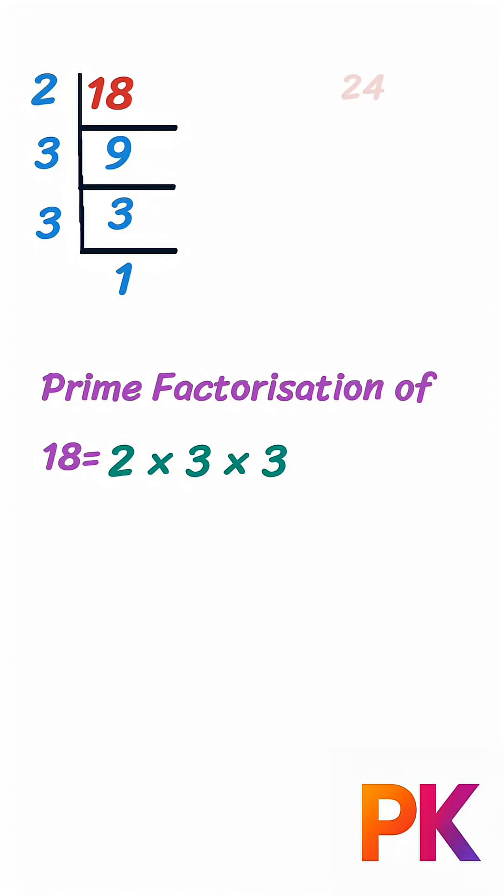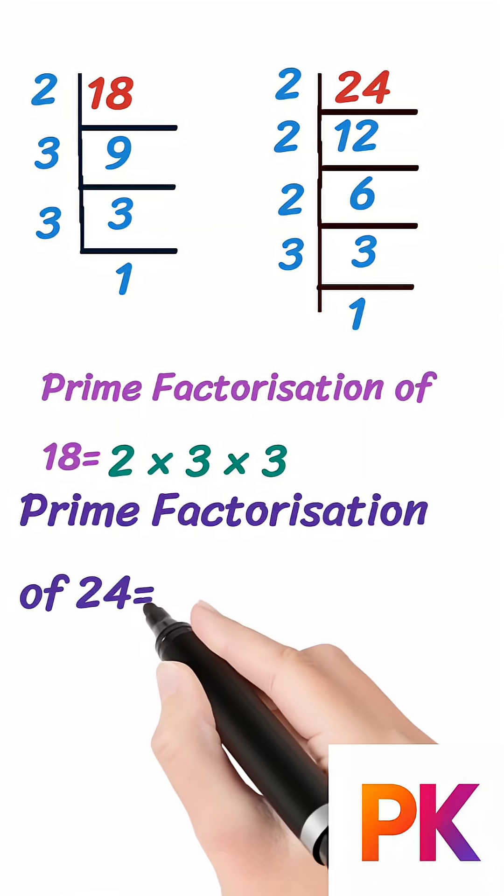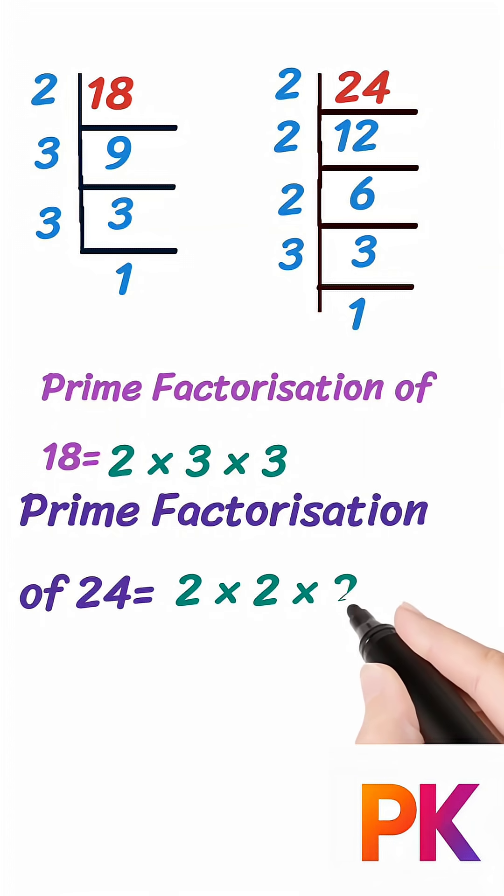Now take the second number, 24. 24 divided by 2 is equal to 12. 12 divided by 2 is equal to 6. 6 divided by 2 is equal to 3. 3 divided by 3 is equal to 1. So, prime factors of 24 are 2 into 2 into 2 into 3. Step 2.